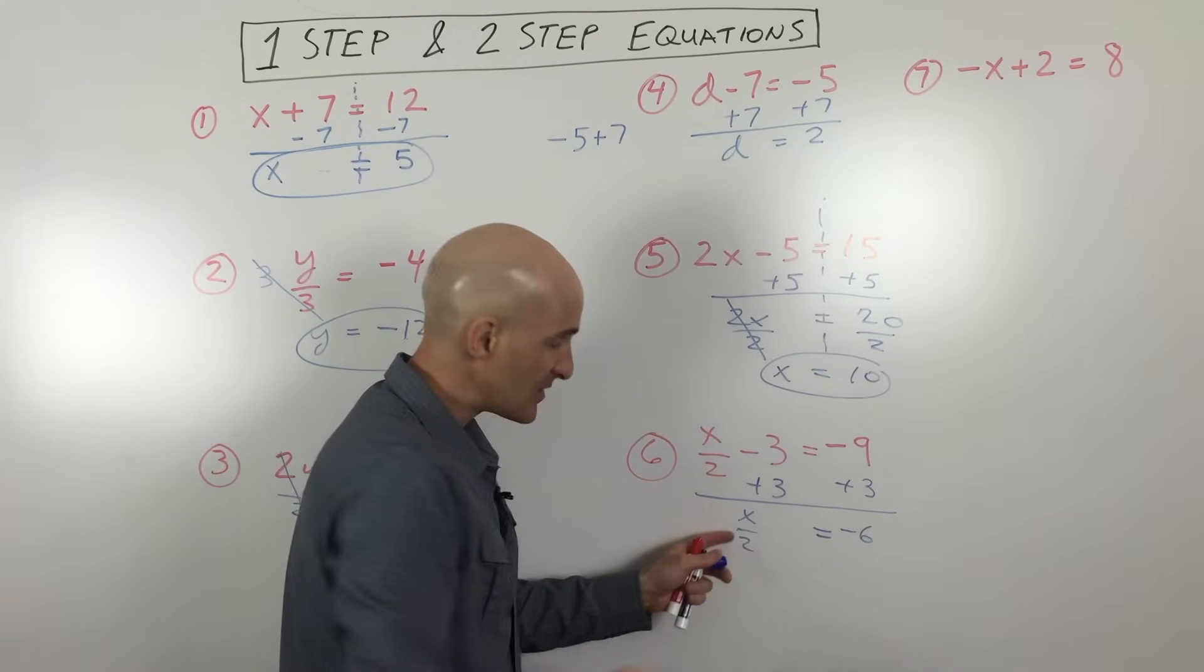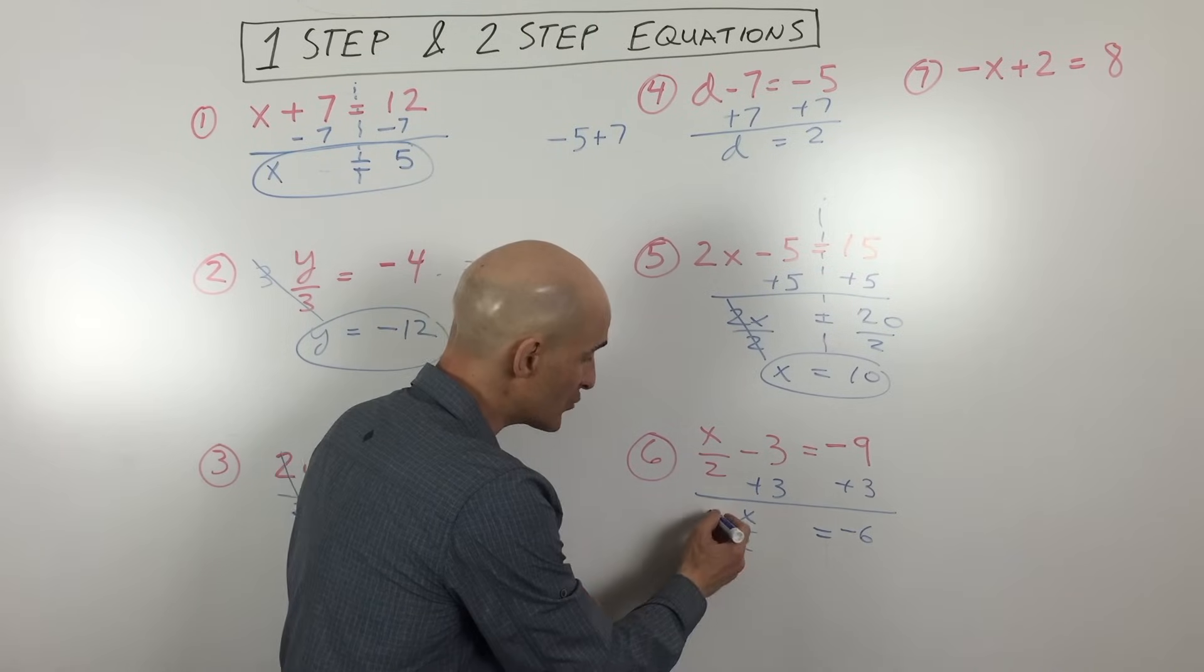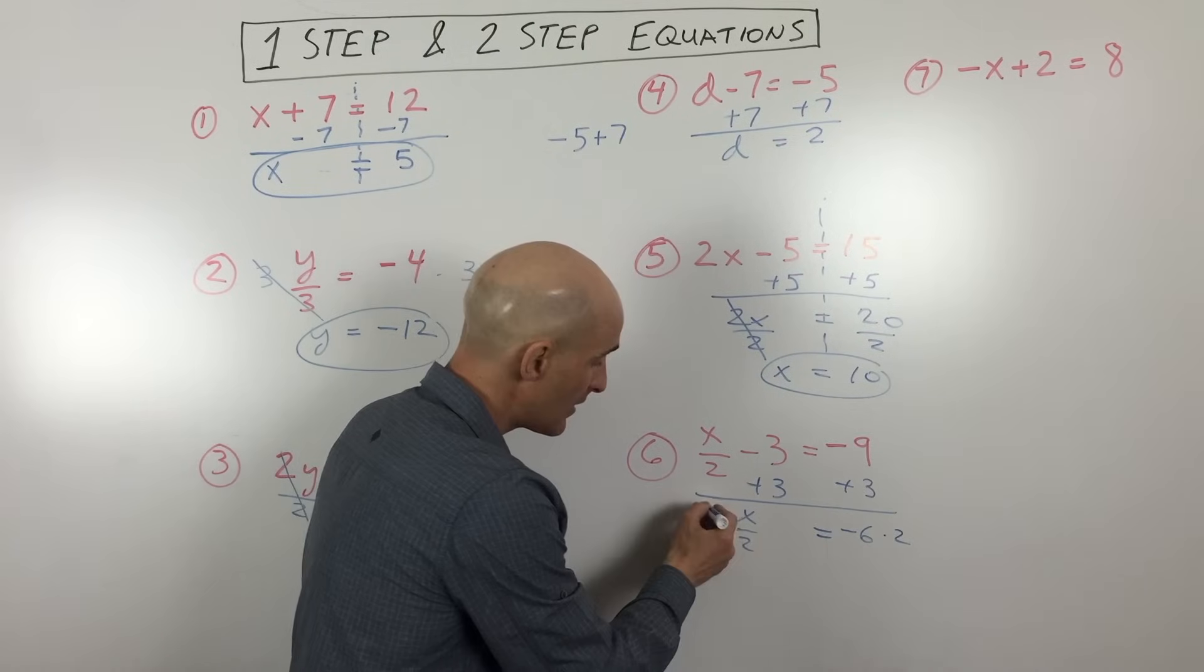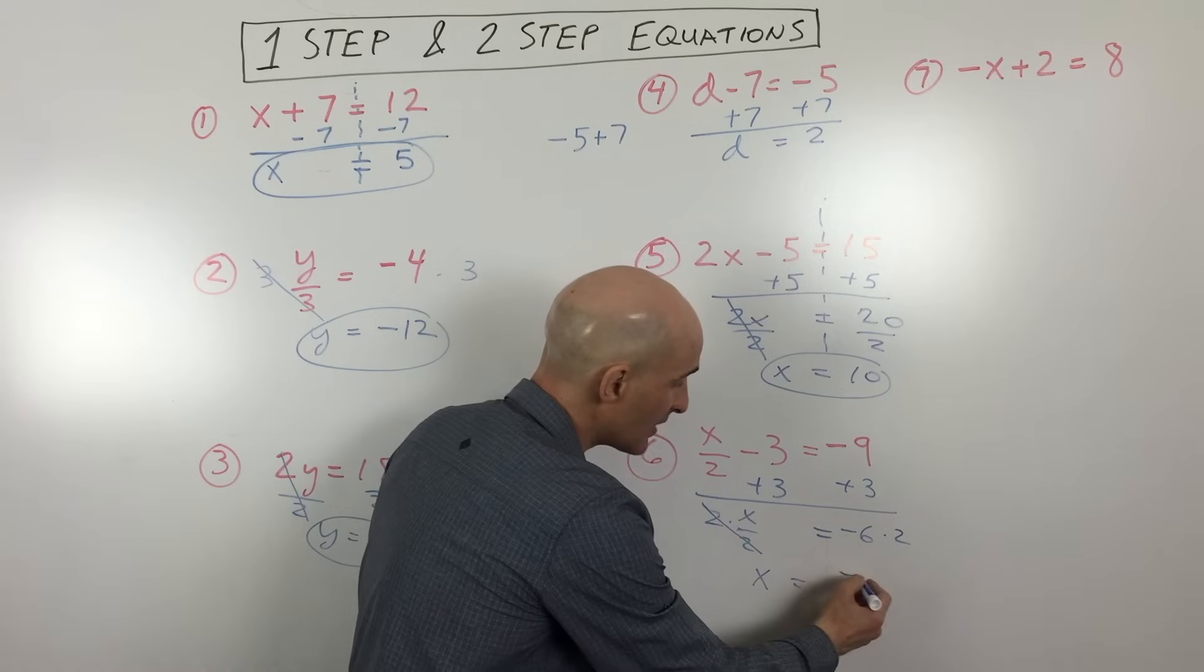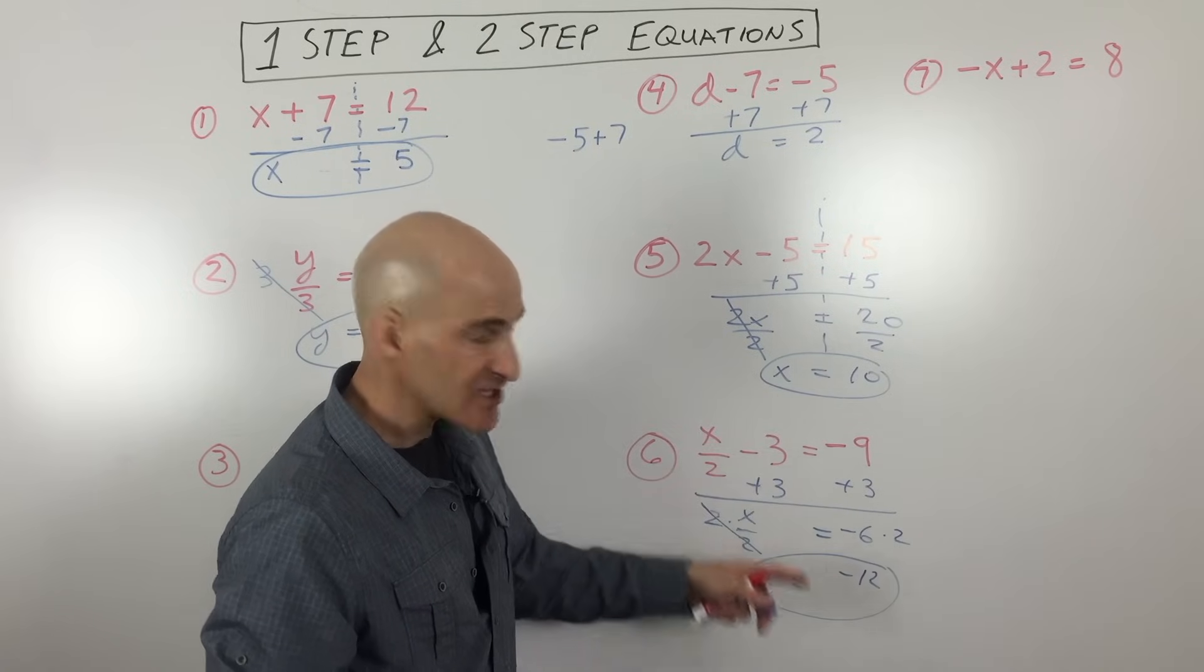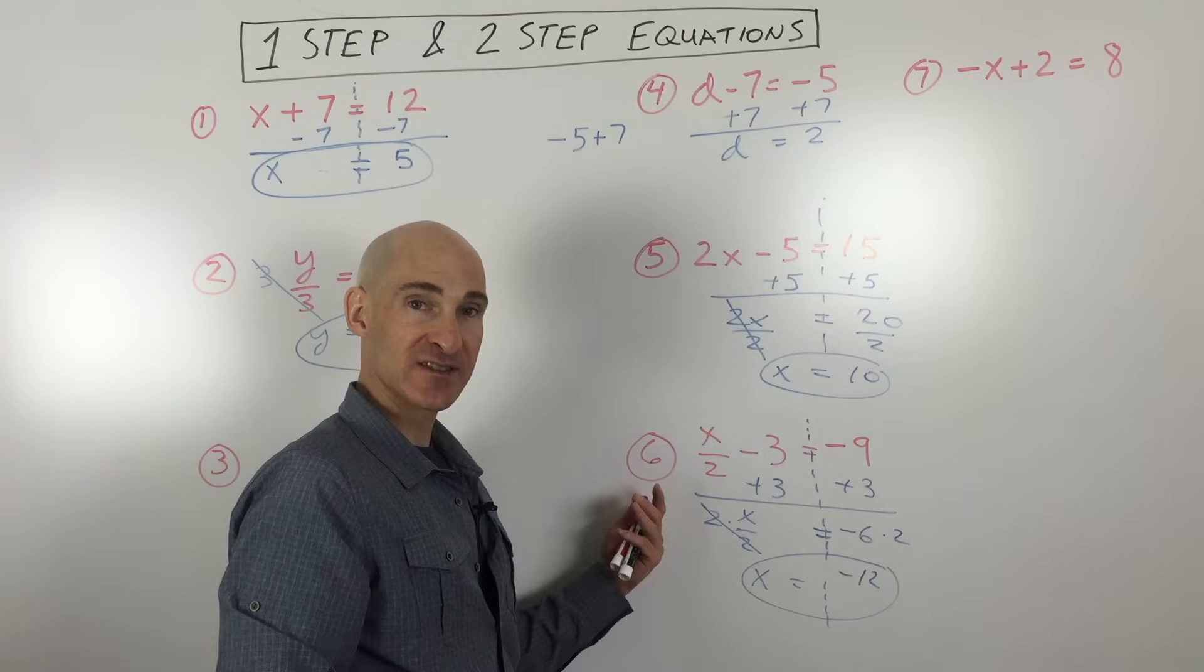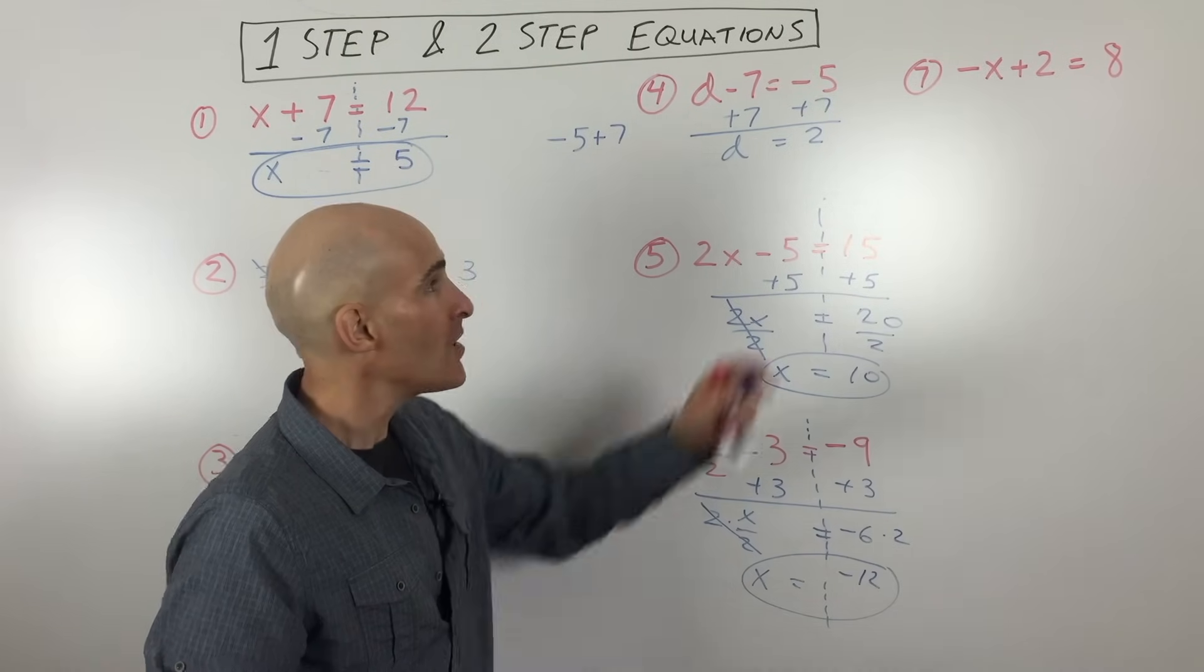Now, again, when you see that fraction bar, that means divided by. So the opposite of dividing by 2 would be to multiply by 2. So I'm going to multiply the left and the right sides of the equation by 2. These are going to cancel one another out because they're opposites. And we get negative 6 times 2 is negative 12. Again, just some little pointers here. You can see I'm showing each step as I go along, and I'm trying to keep my equal signs lined up to separate my left side of my equation from my right side. So you're with me so far?